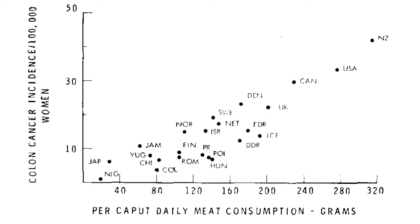On the x-axis we can see per head daily meat consumption in grams. On the y-axis we can see colon cancer incidence per 100,000 women. The dots on this scatter plot represent different countries, and if you look at this graph you can see that there is a positive correlation between per capita meat consumption by country and incidence of colon cancer among women.